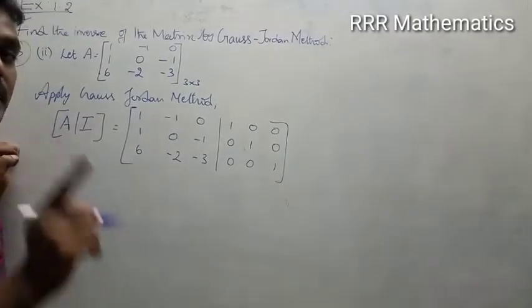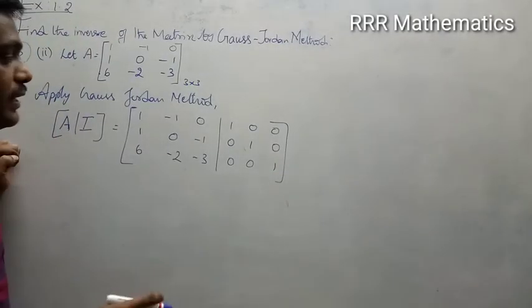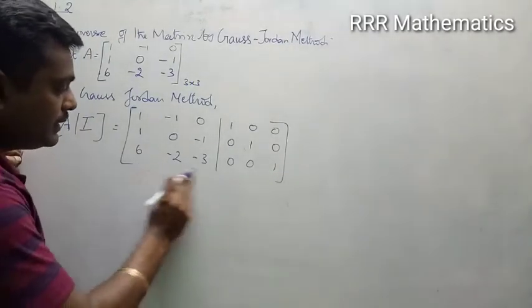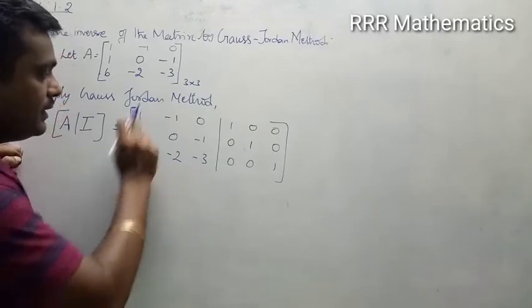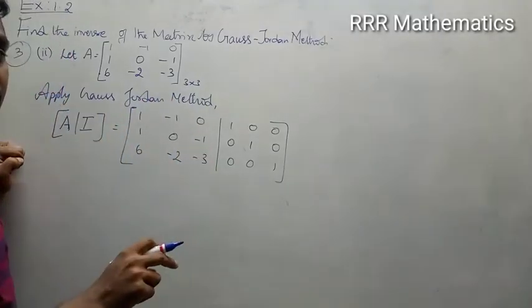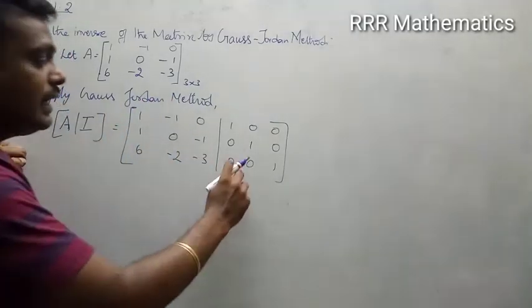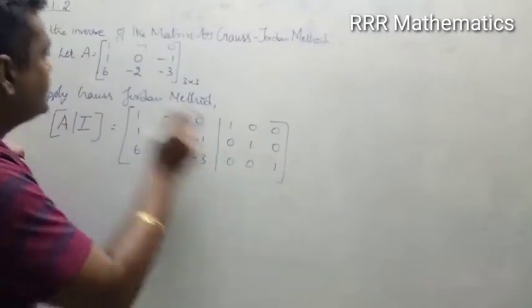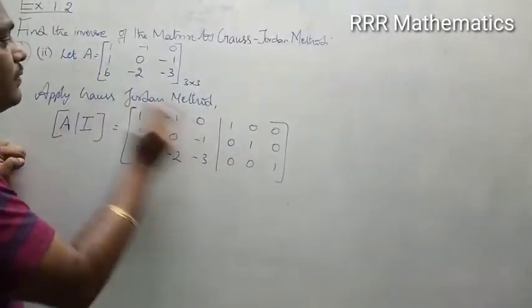The process is by using elementary operations, you want to bring this 3 by 3 matrix as an identity matrix, and respectively what you are getting on the right side is the inverse of A.